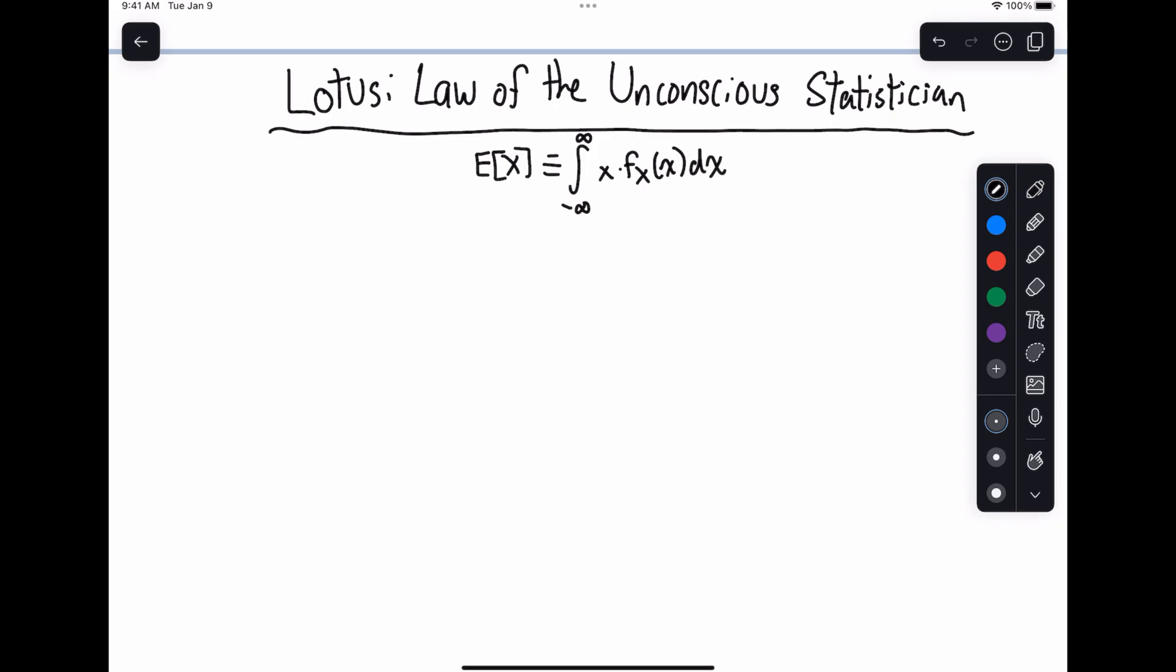The reason this is called Law of the Unconscious Statistician is because it's the kind of thing a statistician would come up with without thinking it needed proof, or would just kind of do it after maybe having a few beers. And in this case, it actually ends up being the case. The straightforward answer is the one that you would expect.